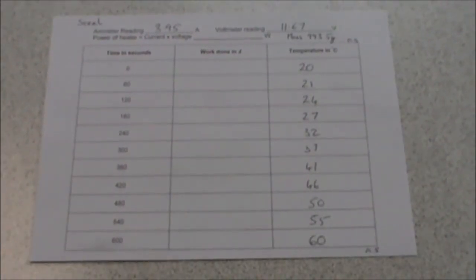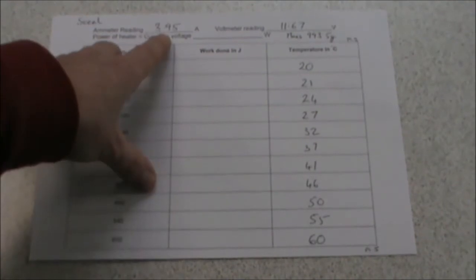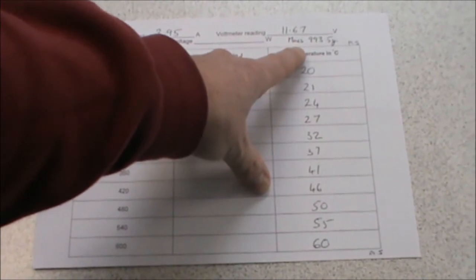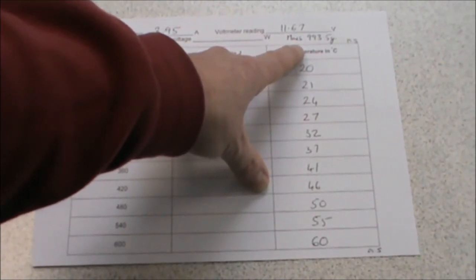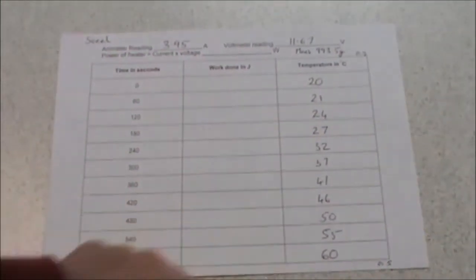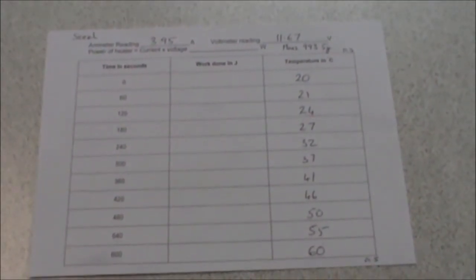These are the results for the steel. An ammeter reading of 3.95 amps, a voltmeter reading of 11.67, and a mass of 993.5 grams. These are the temperatures that you need to fill in to your results table.